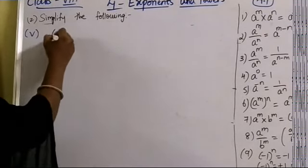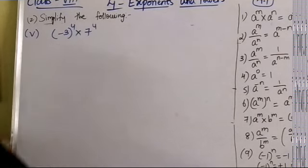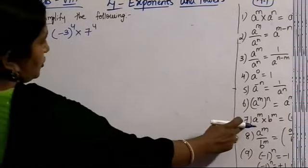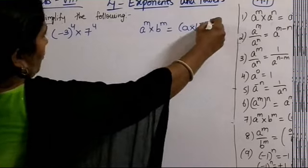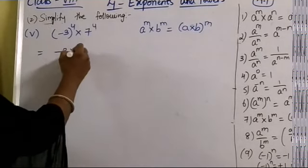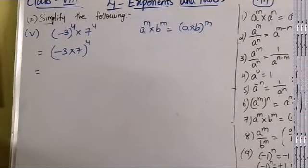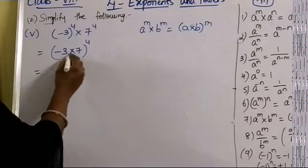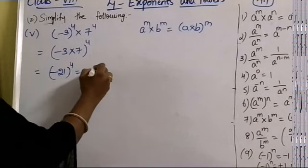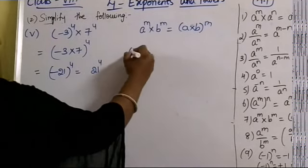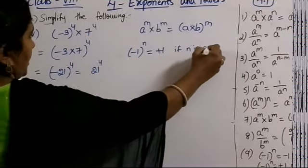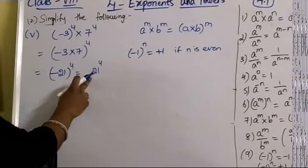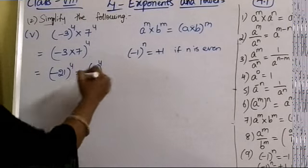Fifth question: (-3)⁴ × 7⁴. The bases are different but the powers are the same. Using the law a^m × b^m = (a×b)^m: (-3 × 7)^4 = (-21)^4. Since the power 4 is even, (-1)^4 = +1, so the answer is 21⁴.